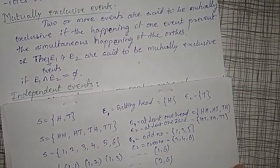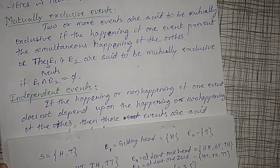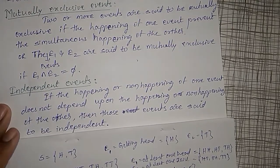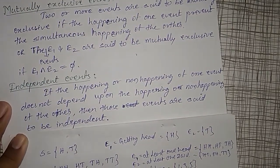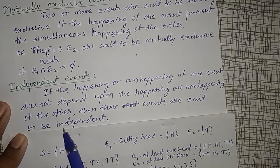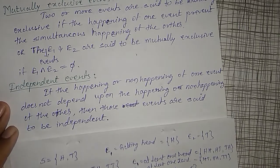Independent events: if the happening or non-happening of one event does not depend upon the happening or non-happening of the other, then those events are said to be independent. E1 and E2 are independent — such events are known as independent events.